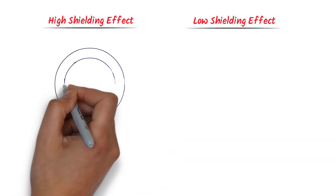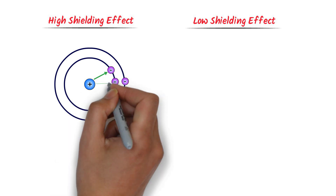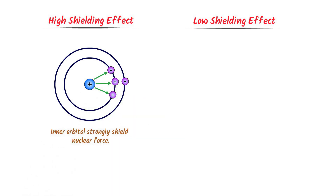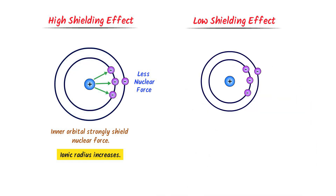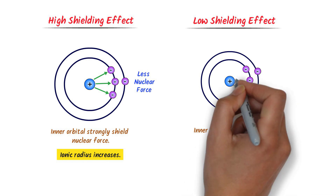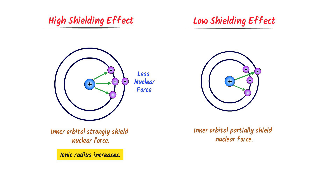Now let me teach you the concept of high and low Shielding Effect. In the case of high shielding effect, if an orbital strongly blocks or shields the nuclear force, the electron in that orbital receives less nuclear force. As a result, it moves in the outward direction and the ionic radius or size of the atom increases. On the other hand, if an orbital only partially blocks the nuclear force, the electron receives more nuclear force, moves inward, and the ionic radius decreases.